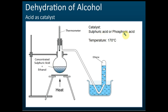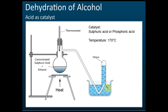Sulfuric acid and phosphoric acid are oxidizing agents — we'll learn about oxidation in the next chapter. If the temperature is too high, they will oxidize the alkene, so we must control the temperature at 170 degrees Celsius. At 170°C, ethanol becomes ethene and propanol becomes propene, and the gas is collected by downward displacement of water.